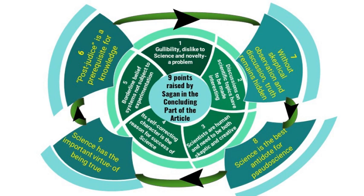Moving on to the second point, in the next paragraph Sagan discusses how scientific topics have to be made interesting. Whenever we hear the term 'science,' at least some people — mostly non-experts in the field — react with dislike or lack of interest. Carl Sagan raises this point: if science has to reach more people, it has to be made interesting. How that is done, we will see later.